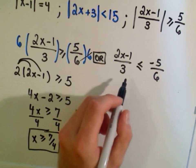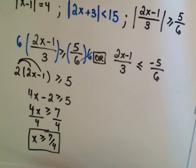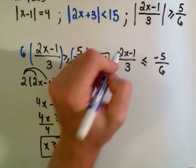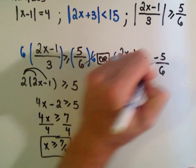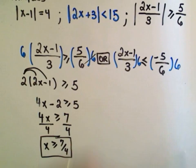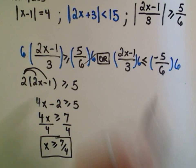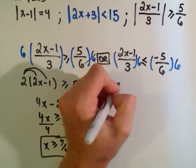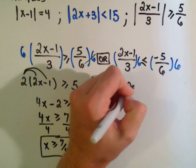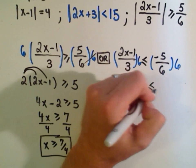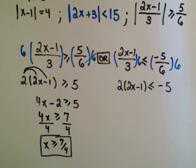Or, the other solutions that will work, we'll do the same thing, multiply both sides by 6. The same thing will happen on the left. My 6 over 3 will become a 2. And I'll have 2x minus 1, less than or equal to, this time, negative 5.